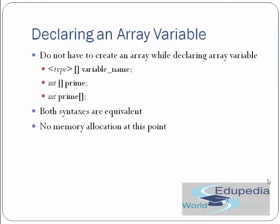First we will study how to declare an array variable. You do not have to create an array while declaring an array variable — we can simply declare it without actually creating one. It can be done by providing the type, then the brackets, then the variable name. Both orderings are equally correct, and no memory allocation takes place at this point.